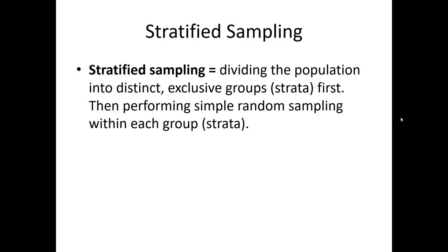Stratified sampling is another common form of probabilistic sampling. In stratified sampling, we simply divide the entire population into distinct exclusive groups, or strata, first. Then we perform simple random sampling within each one of those strata.